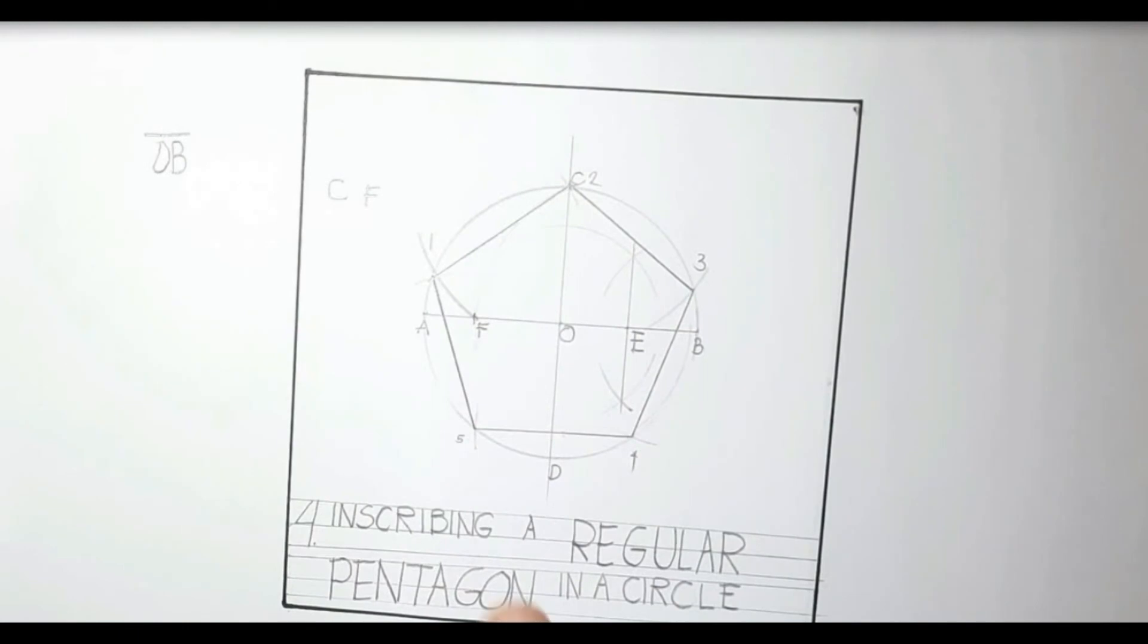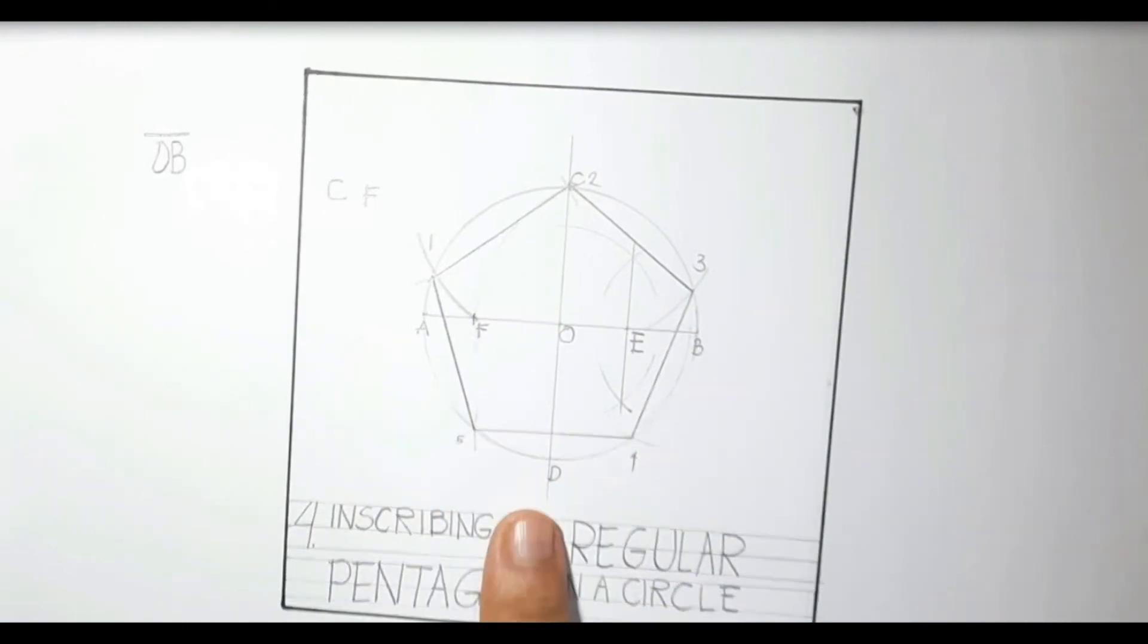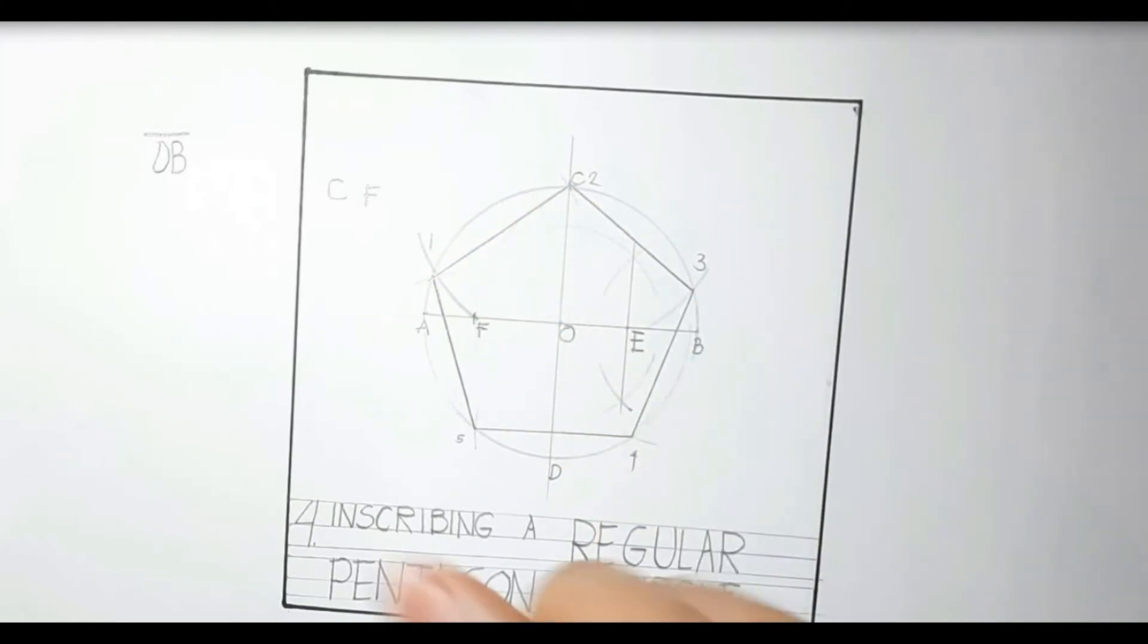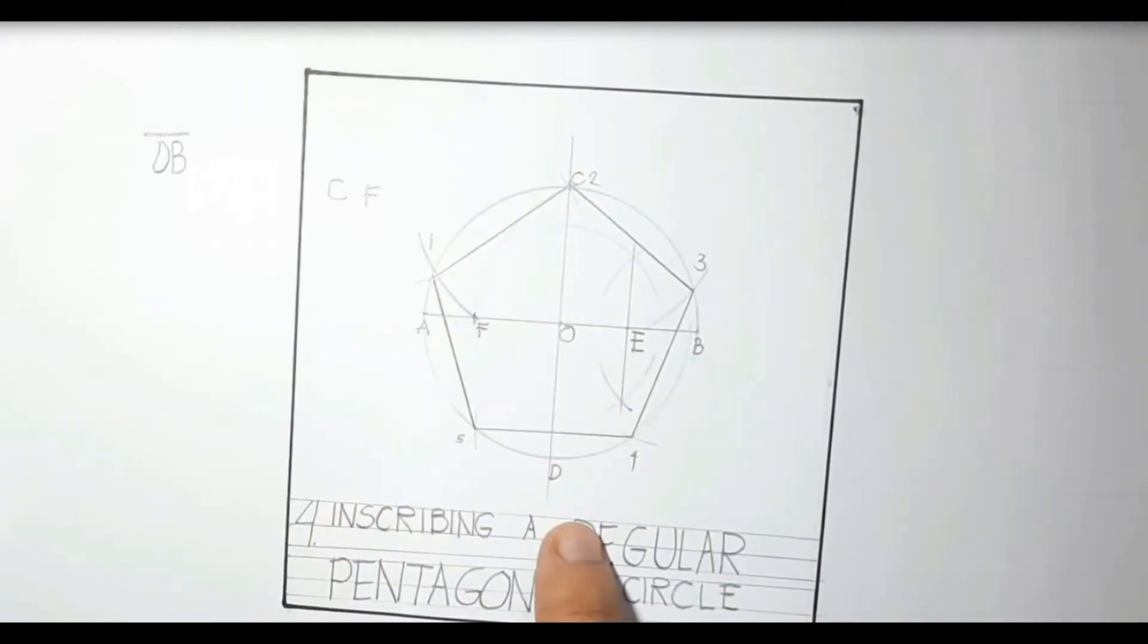And we're done inscribing a regular pentagon in a circle. Take note that the distance will be from point C to point F.